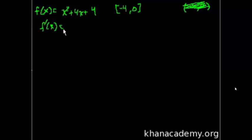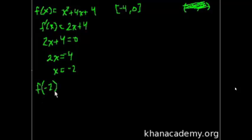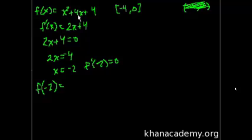f prime of x is equal to 2x plus 4. So when does this equal 0? 2x plus 4 equals 0, so 2x equals minus 4, so x equals minus 2. When x equals minus 2, we know f prime of minus 2 is equal to 0 — we just solved for that, so the slope is 0 at that point. f of minus 2 is 4 minus 8 plus 4, so f of minus 2 equals 0.